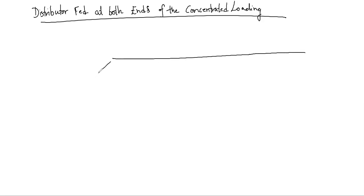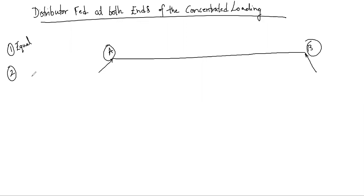Consider a long distributor with end A and end B. In order to meet the loading requirements it is better to feed it from both ends A and B. The two ends of the distributor may be supplied with two different voltages or at equal voltages — so either equal level or unequal level of voltages. A and B are the two feeding points.